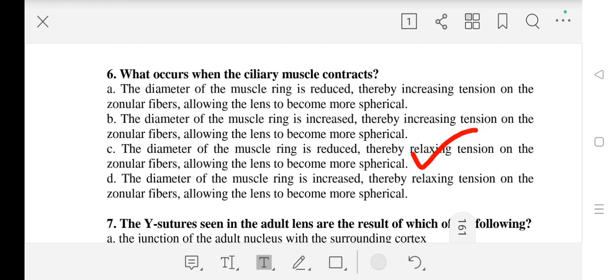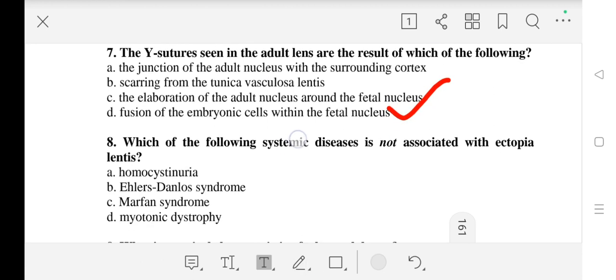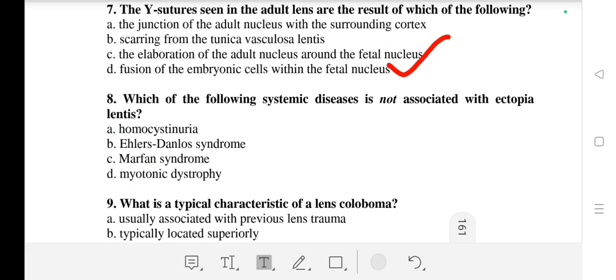Question number 7: The Y-sutures seen in the adult lens are the result of which of the following? Our correct answer is the fusion of the embryonic cells within the fetal nucleus. Question number 8: Which of the following systemic diseases is not associated with ectopia lentis? Our correct answer is myotonic dystrophy.